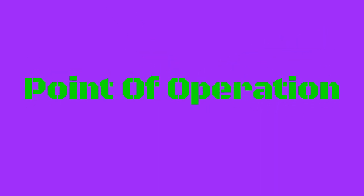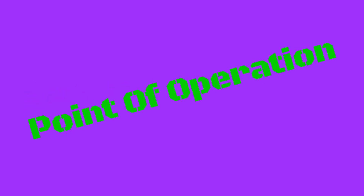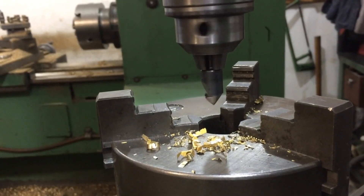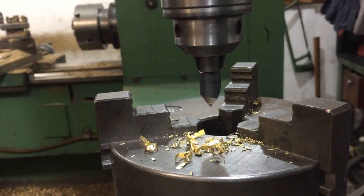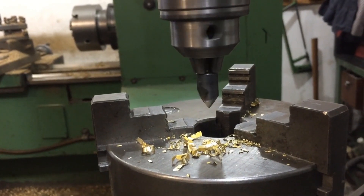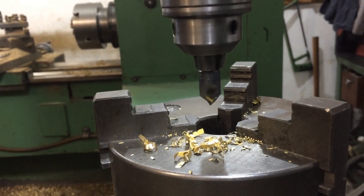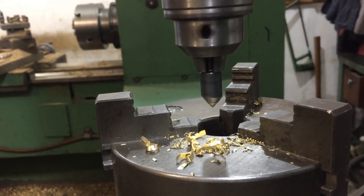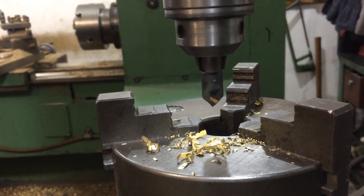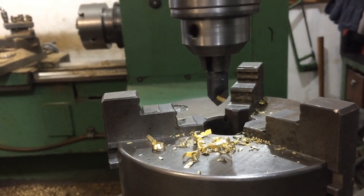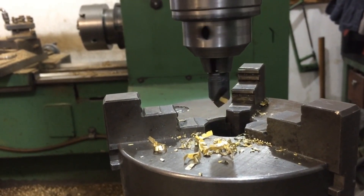Point of operation — this is where a machine is performing work on a material. Some examples of points of operation include a razor cutting fabric, a mechanical press bending metal, or a drill bit cutting holes in metal sheeting.